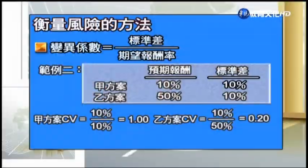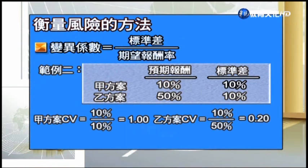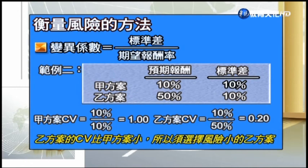我們用一個例子來看哪個方案以變異係數來講比較值得選擇。變異係數等於標準差除以預期報酬率。甲方案預期報酬10%、標準差10%；乙方案預期報酬50%、標準差10%。甲方案變異係數是10%除以10%等於1，每獲得一單位報酬要承受一單位風險。乙方案變異係數是10%除以50%等於0.2，每獲得一單位報酬只要承受0.2單位風險。所以根據變異係數應該選擇風險較小的乙方案。